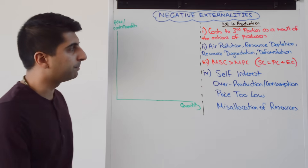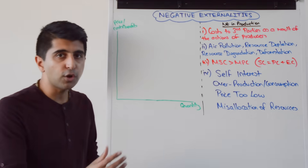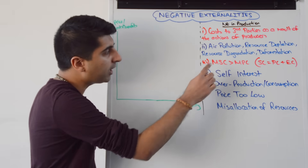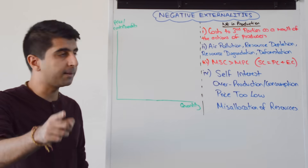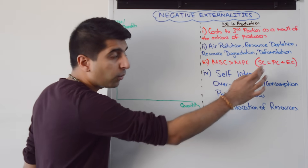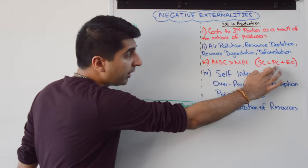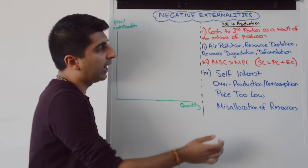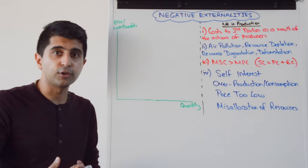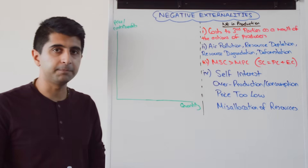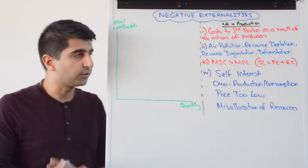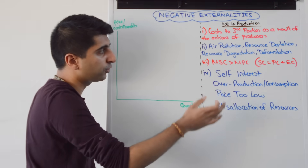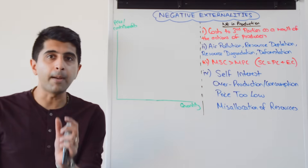On a diagram, how do we show the impact of the negative externality in production? Well, marginal social cost is going to be greater than the marginal private cost. Remember our equation for social cost: it is private cost plus external costs. So here, clearly, there are external costs as a result of production, which means that figure is going to be positive, and social cost is greater than private cost.